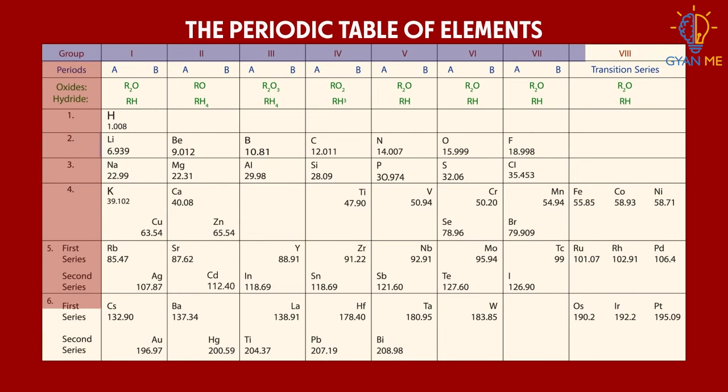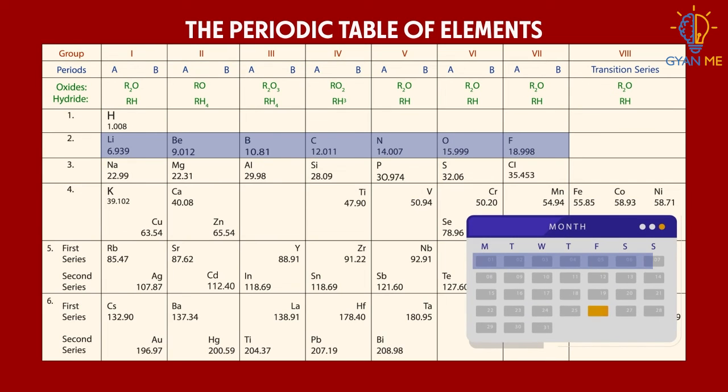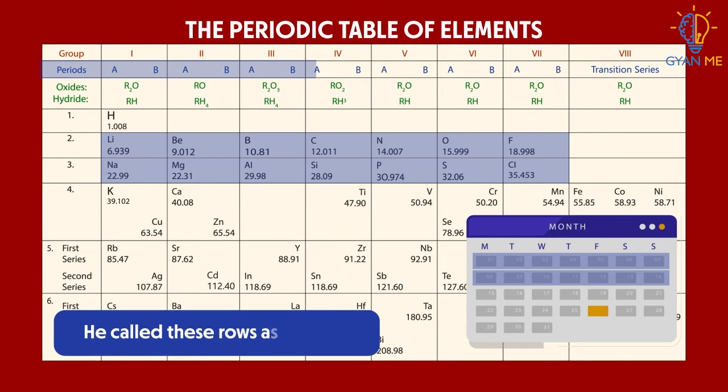So now, if you see this one row, we can compare this with the week in the calendar. Here also, elements are arranged in the increasing order of their masses and they repeat in their property after a certain period. So, he called these rows as periods.